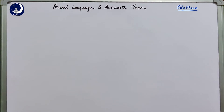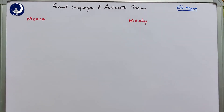Hello all, welcome back to Ergiment Tutorials. In this video we shall discuss about finite automata with outputs — the Moore machine and Mealy machine. Both these machines are used for generating an output rather than acceptance of a string.